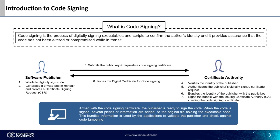Armed with the code signing certificate, the publisher is ready to sign code. When code is signed, several pieces are added to the original file holding the executable code. This bundled information is used by the application to validate the publisher and check against code tampering.